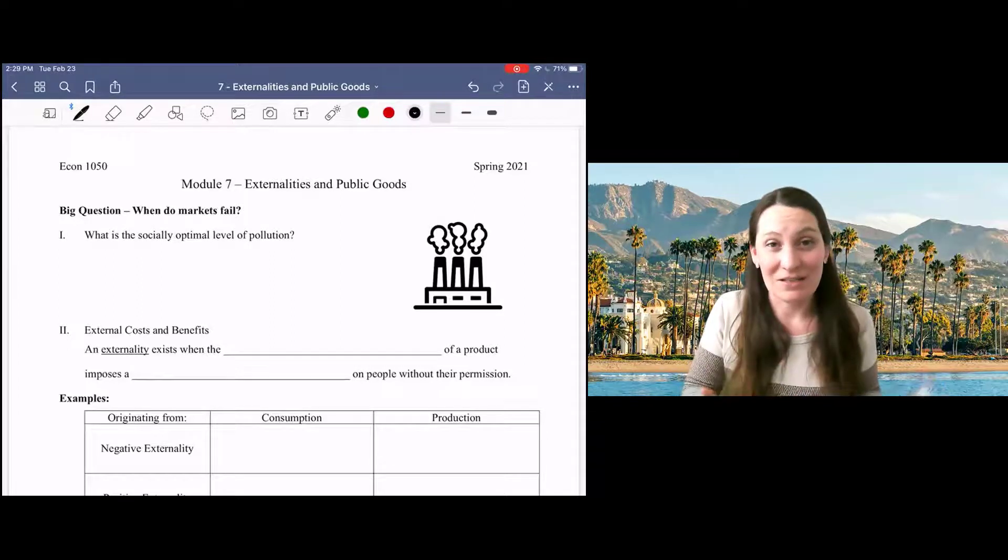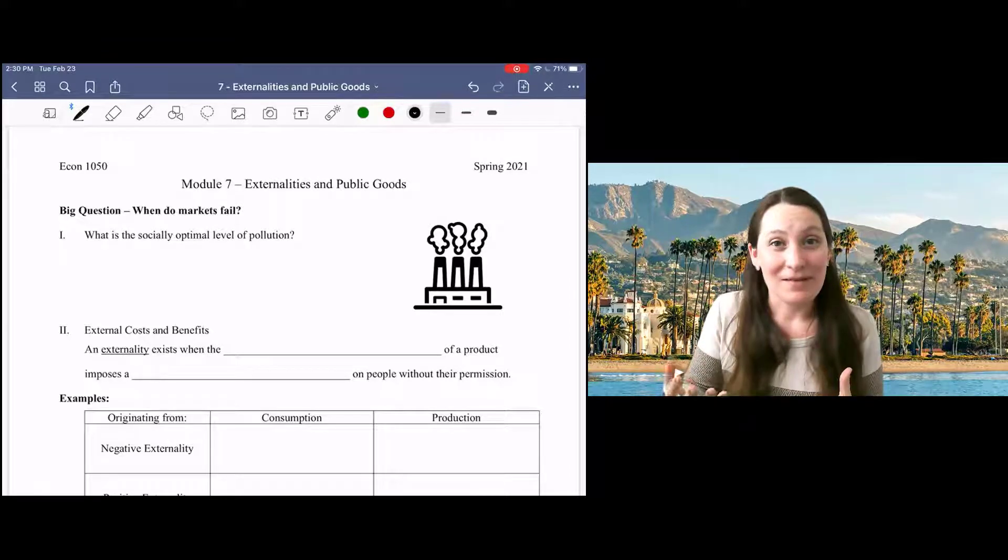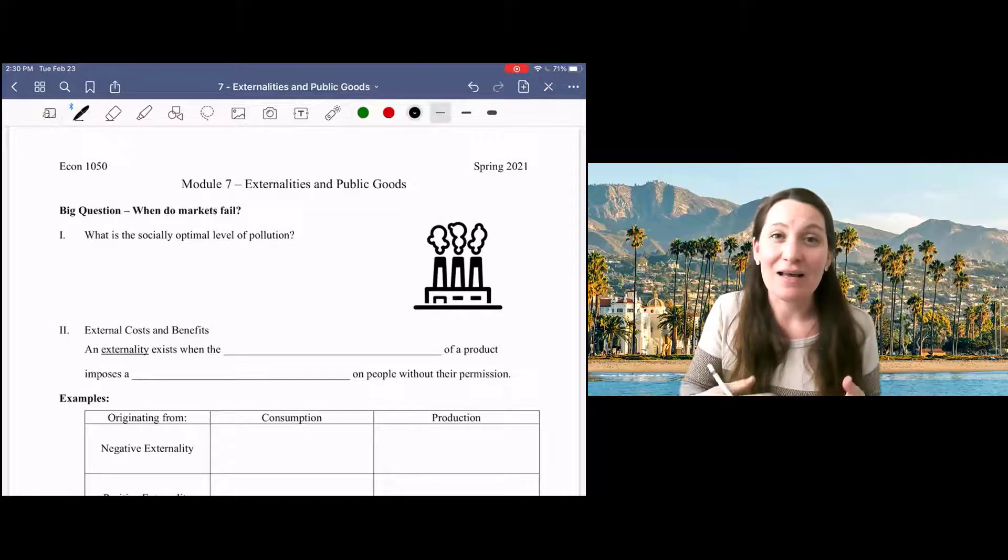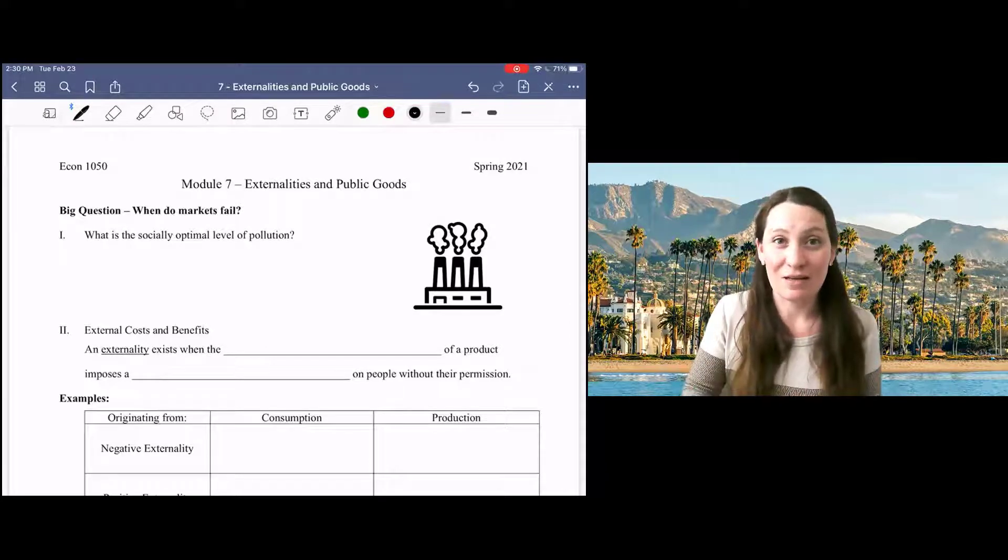So far in our discussion of markets, the highest total surplus or the socially optimal outcome occurs at an unrestricted equilibrium point.